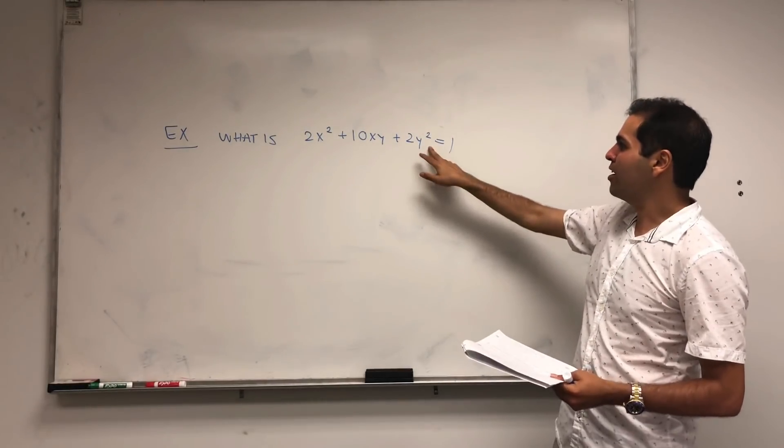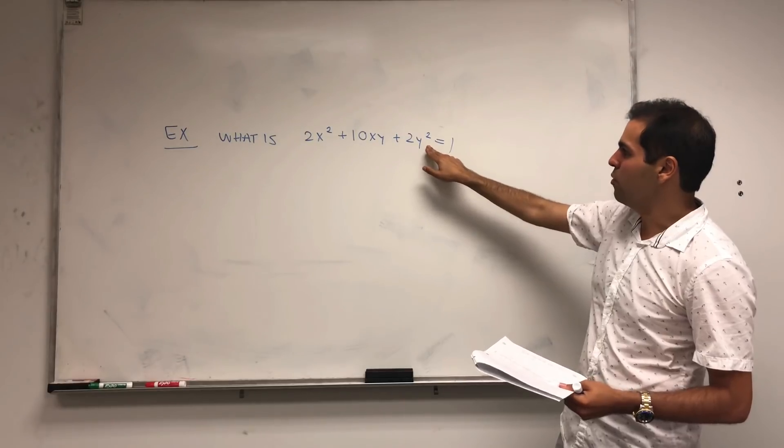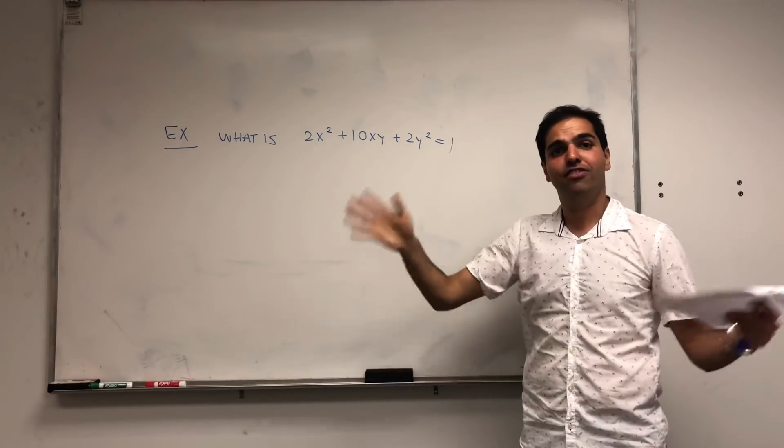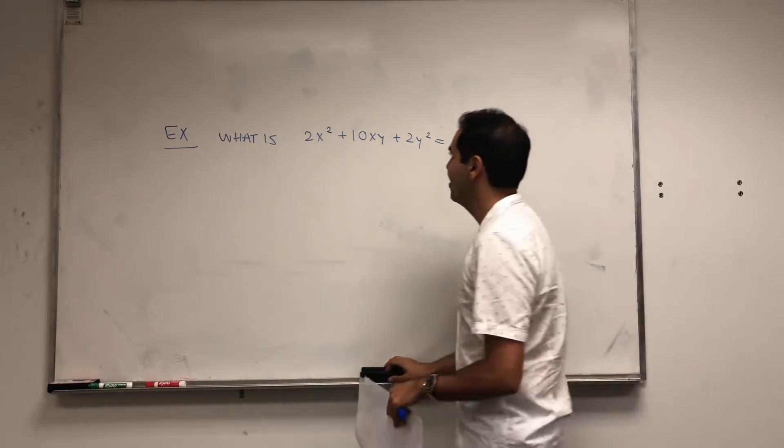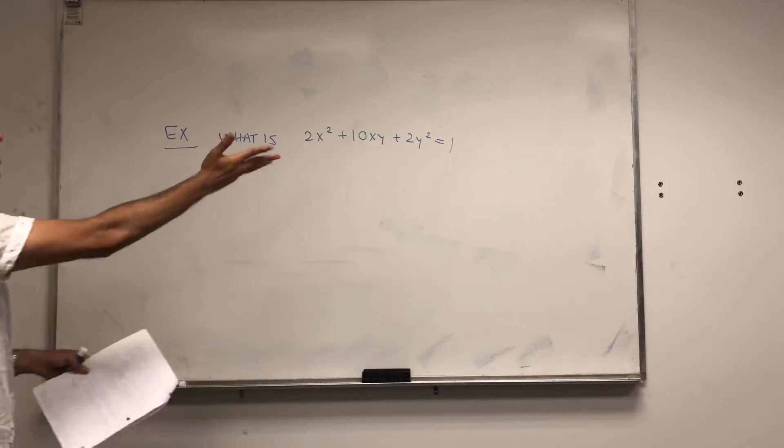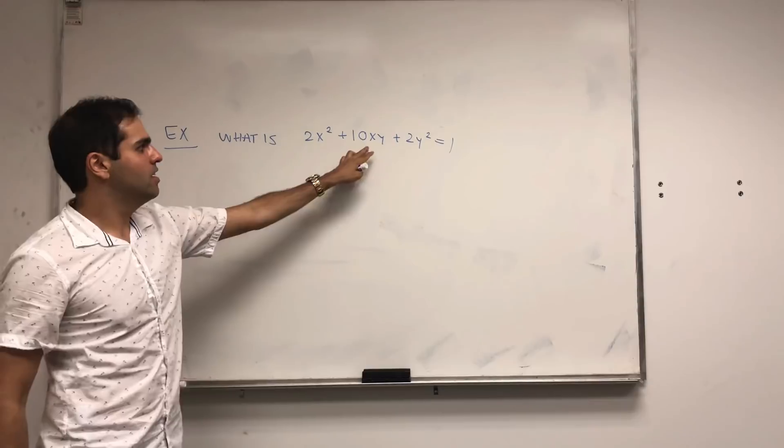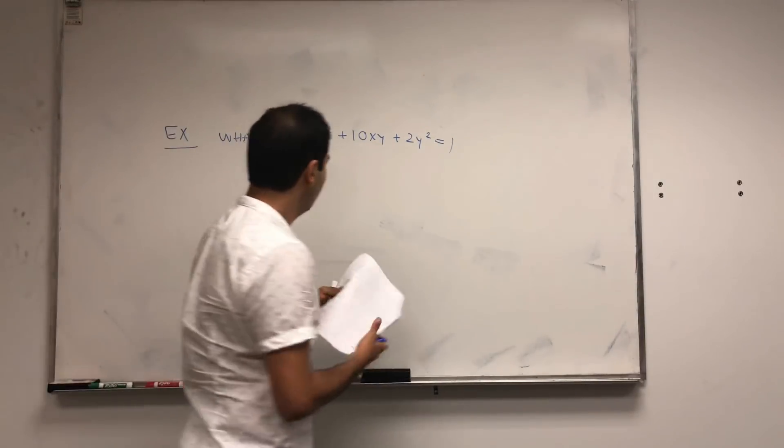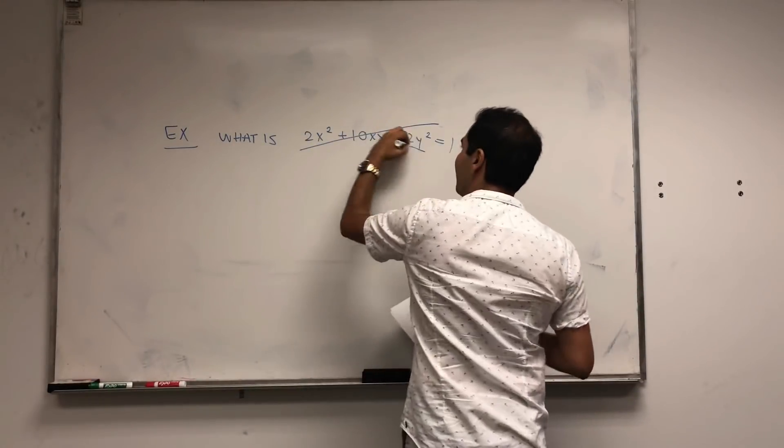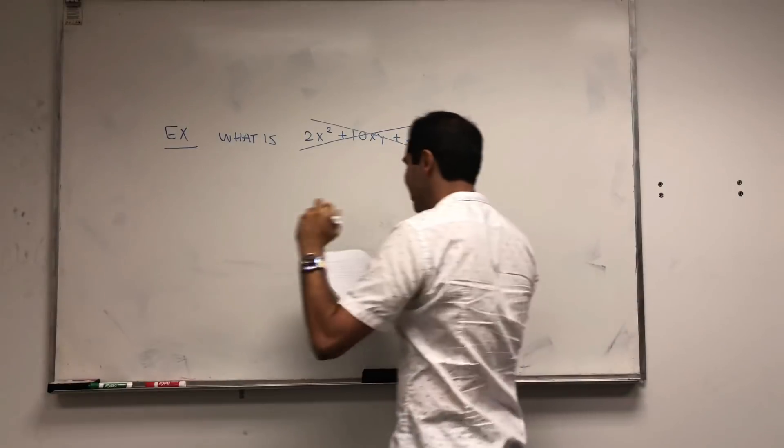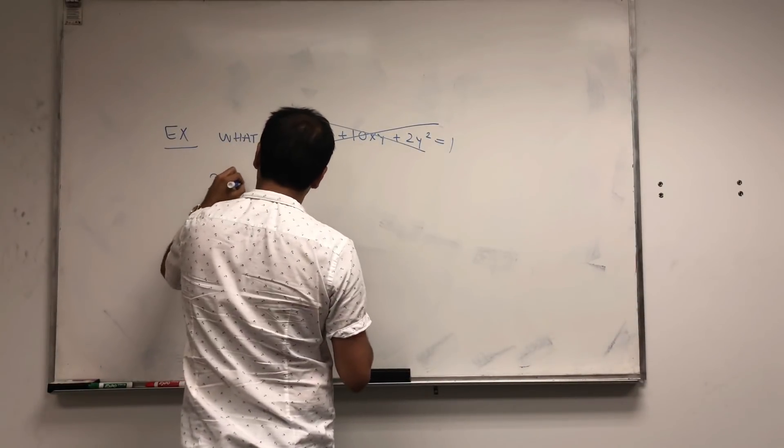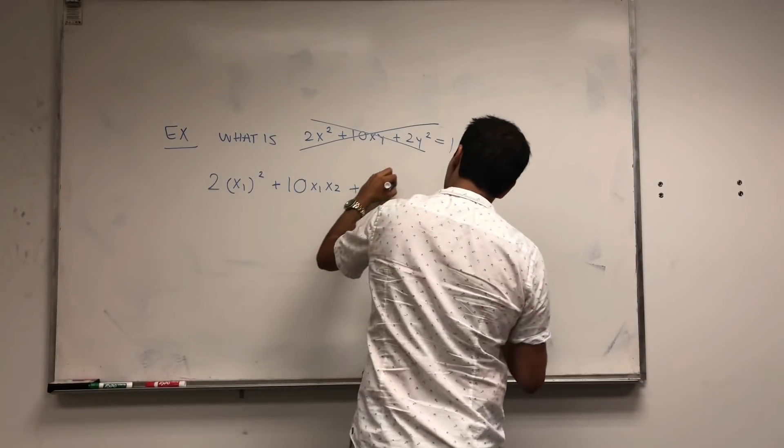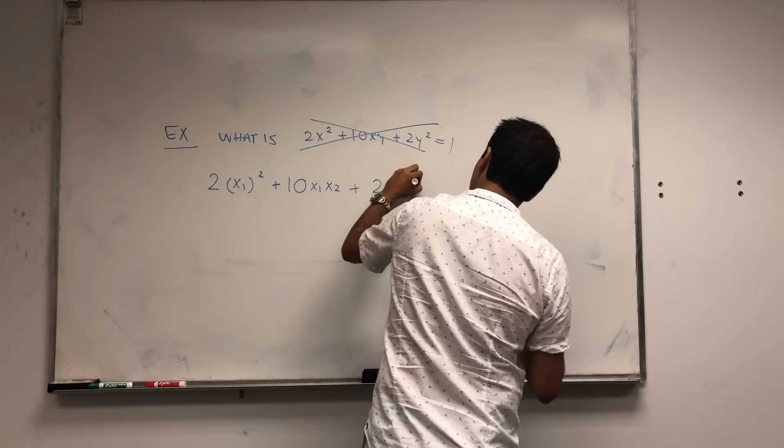You can also do this with plus 2X or plus 3Y, and it's just the same thing after a shift. You would then just have to complete the square or something. But now let's keep it simple. Let's rewrite in terms of vectors X and Y. So 2X1 squared plus 10X1X2 plus 2X2 squared equals to 1.